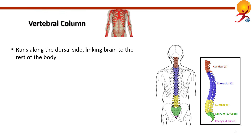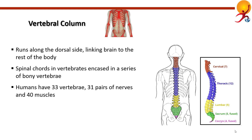In vertebrates, the spinal cord runs along the dorsal side of the body and links the brain to the rest of the body. In humans, the spinal cord is encased in a series of bony vertebrae that comprise the vertebral column. Our back is composed of 33 bones, 31 pairs of nerves, 40 muscles, and numerous connecting tendons and ligaments running from the base of the skull to the tailbone. Between the vertebrae are fibrous elastic cartilages known as discs, which also act as shock absorbers.